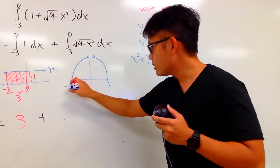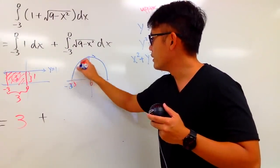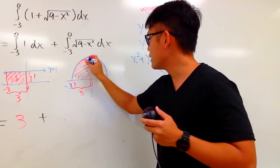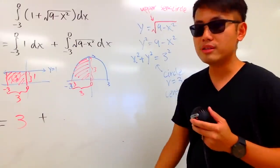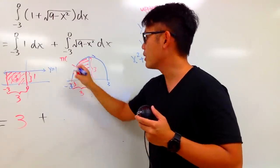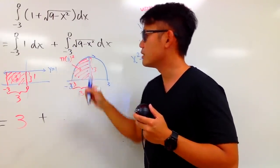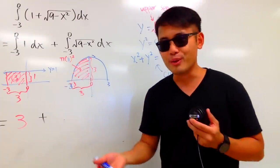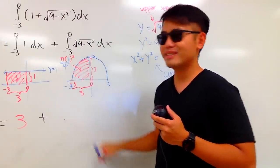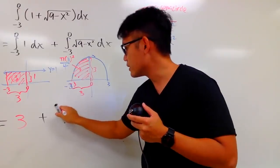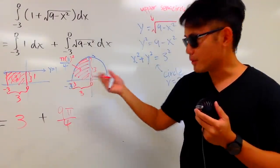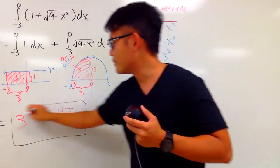Since we go from negative 3 to 0, we are looking at just a quarter circle. Both distances — the horizontal and vertical — are the radius, which is 3. The area of the full circle is pi times radius squared, so pi times 9. But we only want a quarter of it, so we divide by 4, giving 9pi over 4. The final answer is 3 plus 9pi over 4.